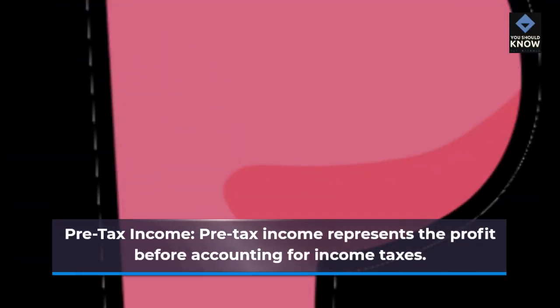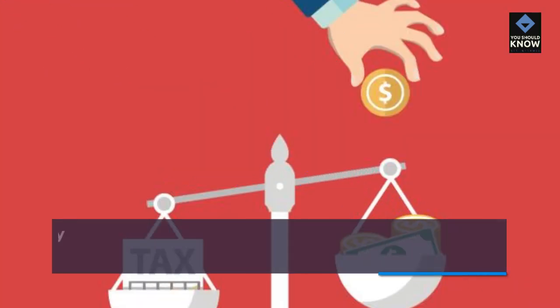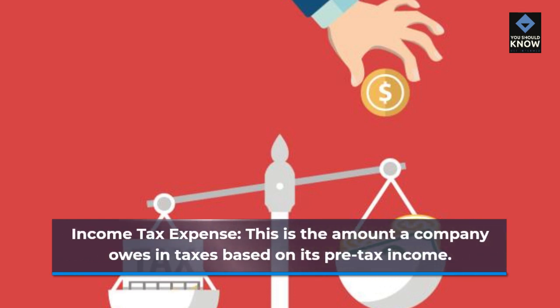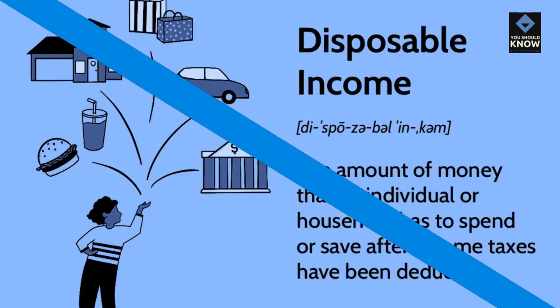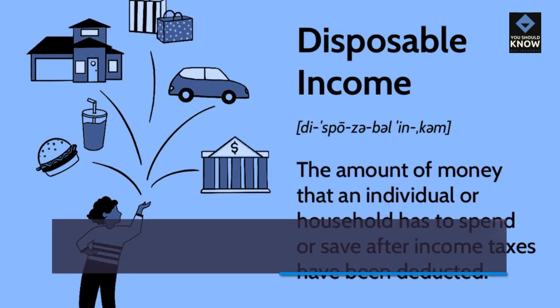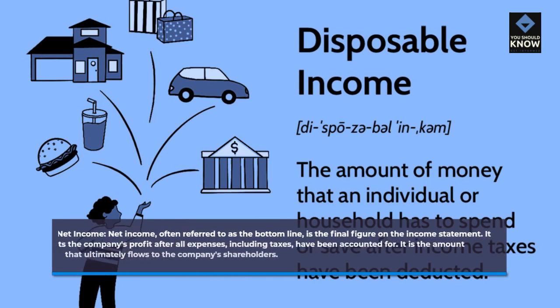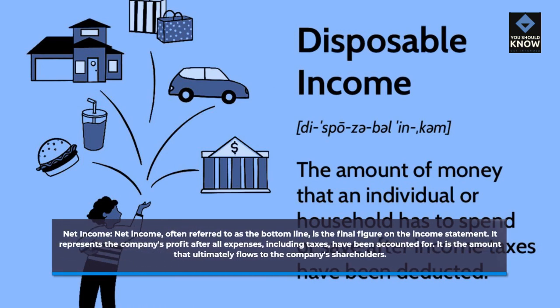Pre-tax income represents the profit before accounting for income taxes. Income tax expense is the amount a company owes in taxes based on its pre-tax income. Net income, often referred to as the bottom line, is the final figure on the income statement. It represents the company's profit after all expenses, including taxes, have been accounted for, and is the amount that ultimately flows to the company's shareholders.